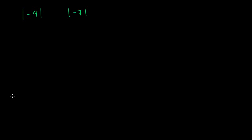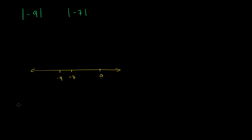Let's think about this a little bit and look at where these numbers are on the number line. We can draw them: this is 0, this is negative 7, and this is negative 9 right over here.